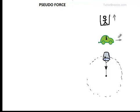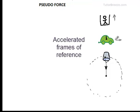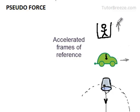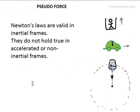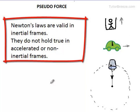All these are accelerating reference frames. It appears that pseudo forces have something to do with such frames of reference. The lift was accelerating upwards, the car was accelerating forwards, and the bucket is moving in a circular path, so it always has a centripetal acceleration. Newton's laws are valid in inertial frames — they do not hold true in accelerated or non-inertial frames.